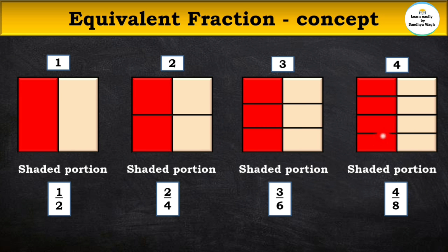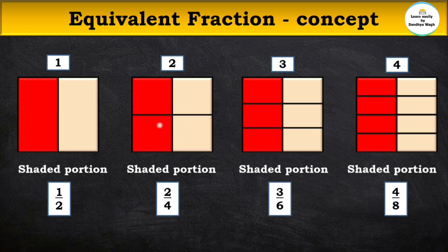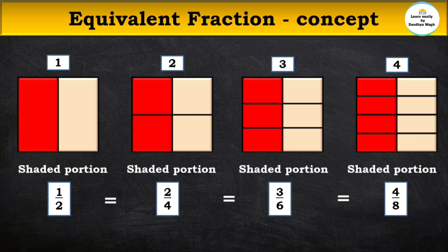The value of all four fractions is the same: 1 upon 2, 2 upon 4, 3 upon 6, and 4 upon 8. The colored part is the same in each figure; drawing more lines just created different equal parts, which is why the fractions look different. Such fractions of equal value are called equivalent fractions.